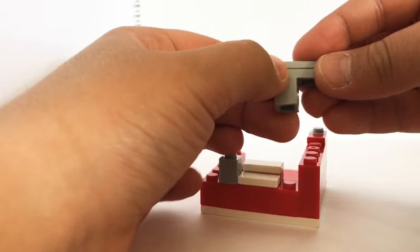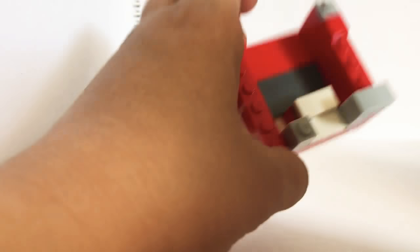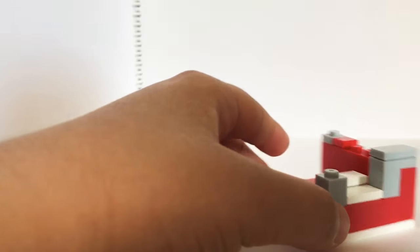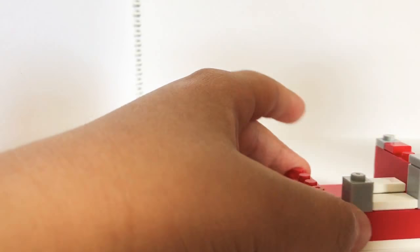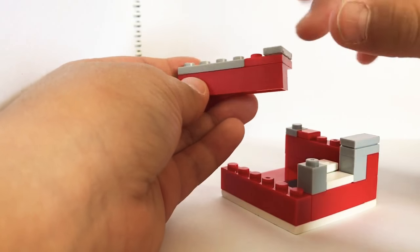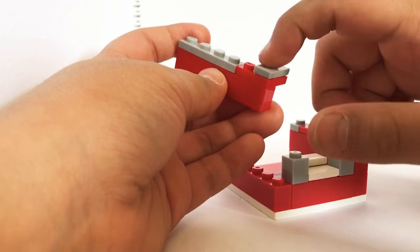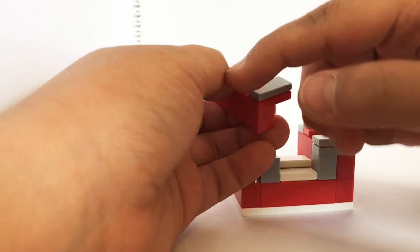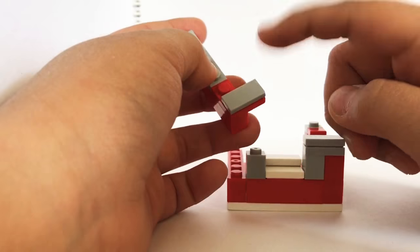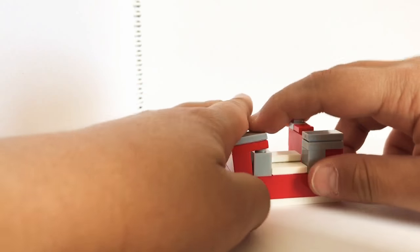1x1 brick, 1x2 plate, 1x2 smooth. Put it right there. And now I'm just going to check first. 1x1 brick, 1x1 plate, 1x1 plate, 1x1 plate and 1x2 smooth. Put it right there.